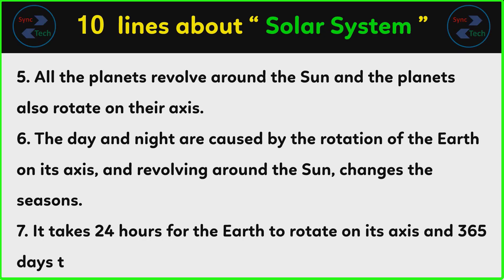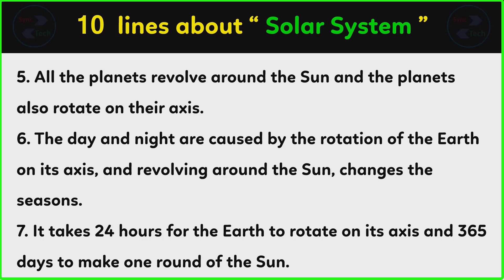It takes 365 days for the Earth to make one complete round of the Sun.